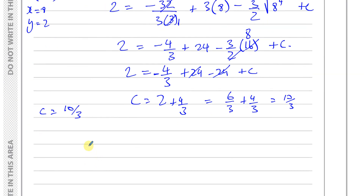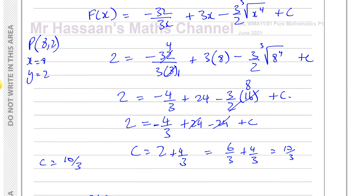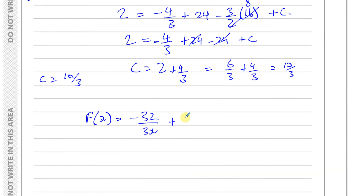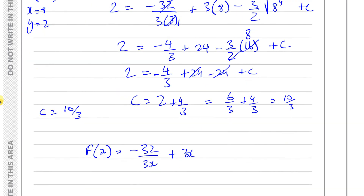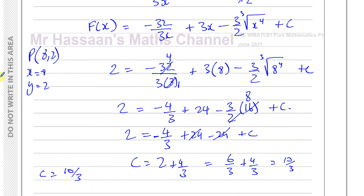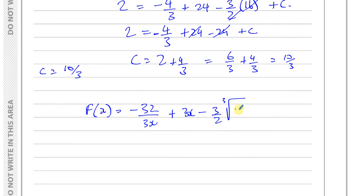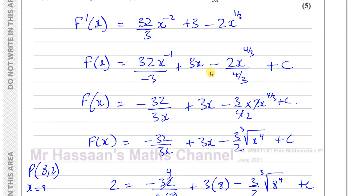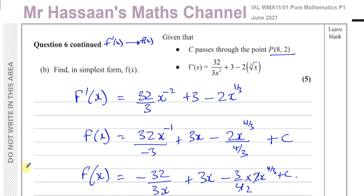With c = 10/3, the final answer is: f(x) = −32/(3x) + 3x − 3/2 × (cube root of x)^4 + 10/3. We found the constant of integration because we knew the curve passes through the point P(8, 2). That completes question 6.